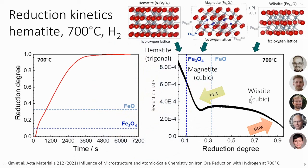When we track the reduction kinetics, you can see the first derivative — the reduction rate — showing transformation from hematite in trigonal crystal structure, which goes very fast into cubic inverse spinel Fe3O4, called magnetite. From magnetite it goes into cubic iron oxide called wüstite. However, the wüstite-to-alpha-iron reduction is very sluggish — you lose about one order of magnitude in reduction speed during this step.